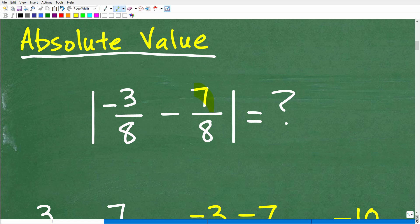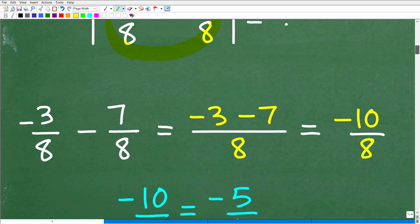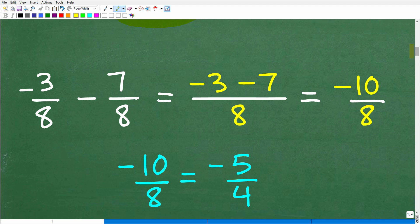All right, so the first thing we need to do is take care of these fractions right here. So we have negative 3 over 8 minus 7 8ths. We're going to have to simplify this, so hopefully you have strong fraction skills. This is actually quite easy. So we can subtract these fractions because they have the same denominator, okay, so we'll have that one denominator 8.